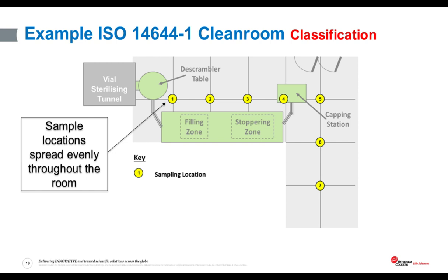Here is an example of a clean room — not meant to be prescriptive. You can see how the ISO standard tells the user to calculate the correct number of locations according to the size of the clean room, and then lay the sampling locations out in an evenly distributed grid pattern across the room. According to the ISO standard, there is no requirement to take a sample where the product is at risk of airborne contamination, because it's just checking the room itself. In this example, following the ISO standard means no samples are taken where a product may be at risk — for instance, at the de-scrambler table, the filling zone, the stopping zone, or the capping station.